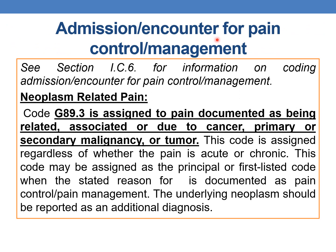Next guideline: Admission or encounter for pain control or management — neoplasm-related pain. Code G89.3 is assigned to pain documented as being related to, associated with, or due to cancer, primary or secondary malignancy, or tumor. This code is assigned regardless of whether the pain is acute or chronic. G89.3 may be assigned as PDX or first-listed code when the reason for visit is pain control or management, and the underlying neoplasm should be reported as an additional diagnosis.